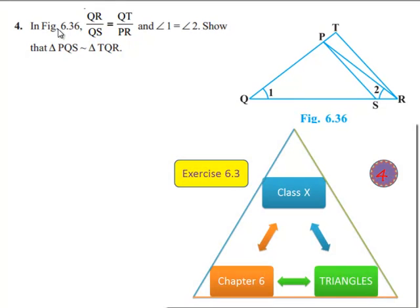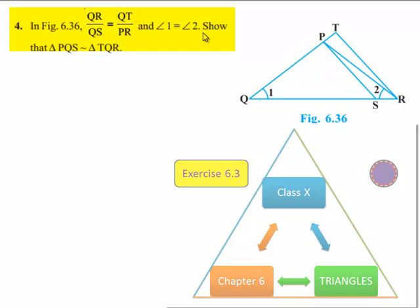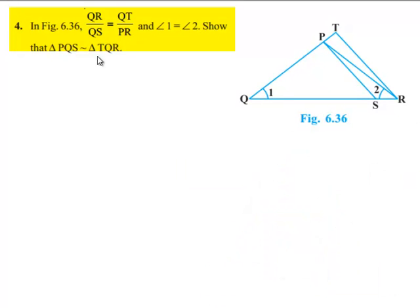Moving on to the fourth question: in figure 6.36, QR by QS is equal to QT by PR, and angle 1 is equal to angle 2. Show that triangle PQS is similar to triangle QTR.